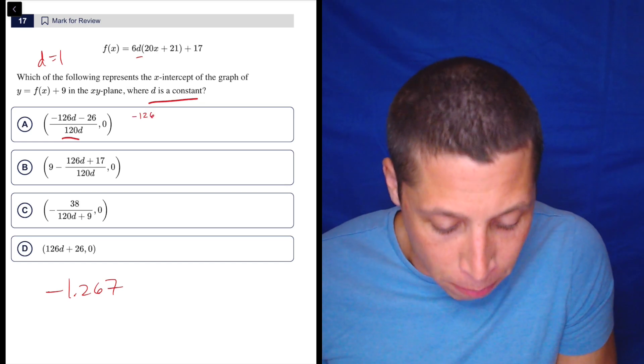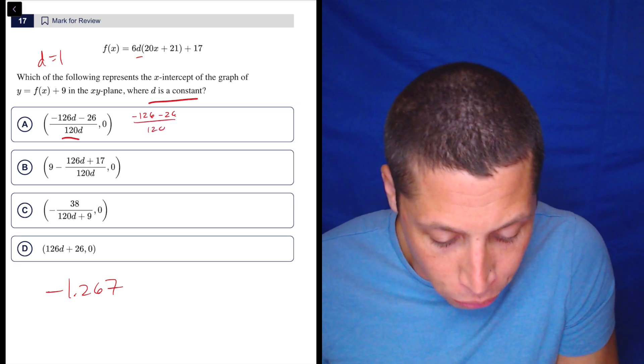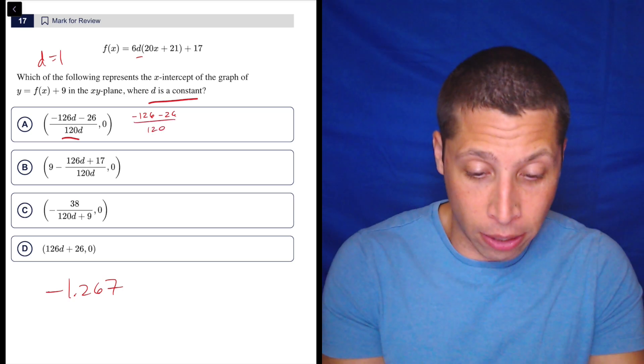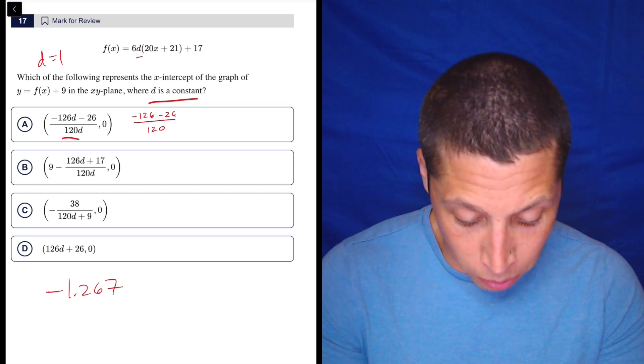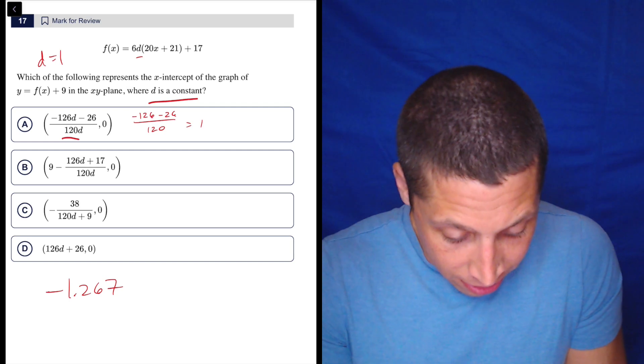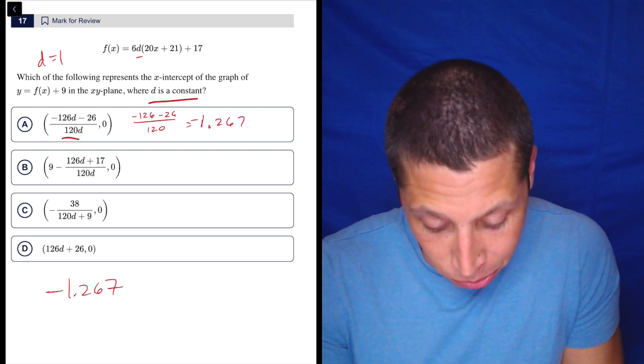So negative 126 times one is negative 126 minus 26 over 120 times one. This is easy for our handheld calculator. So negative 126 minus 26 divided by 120 is negative 1.26 repeating, so 267.